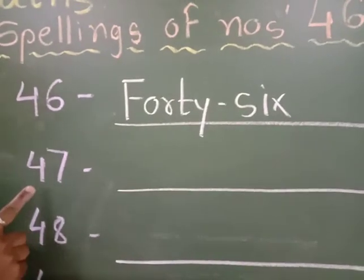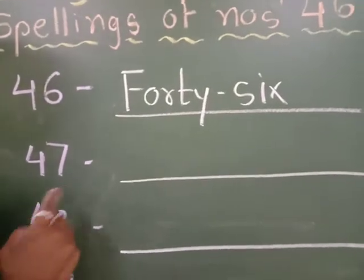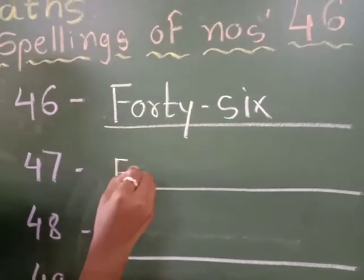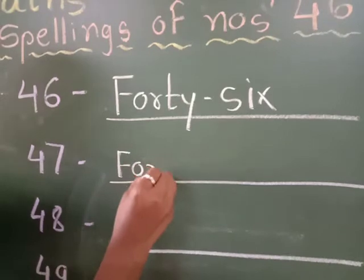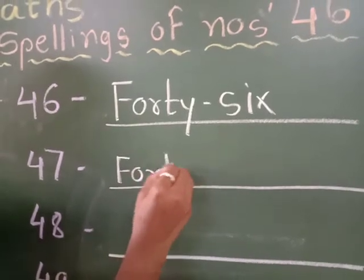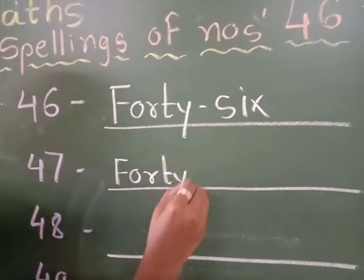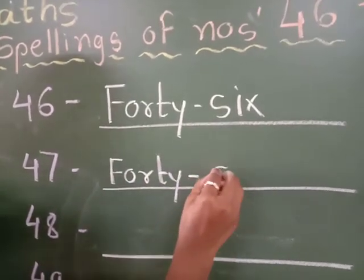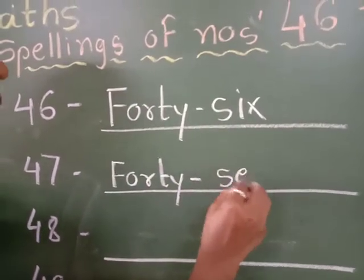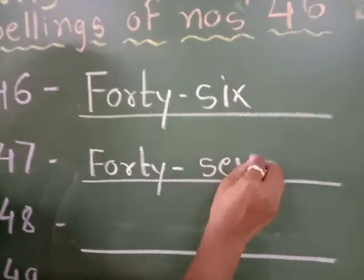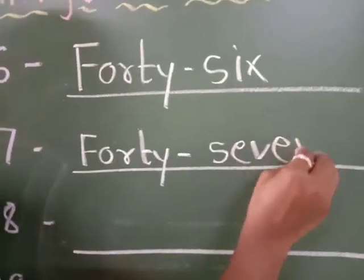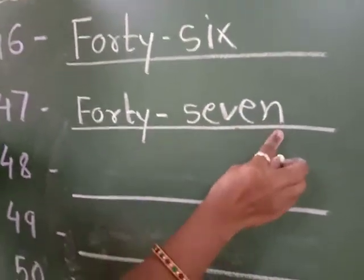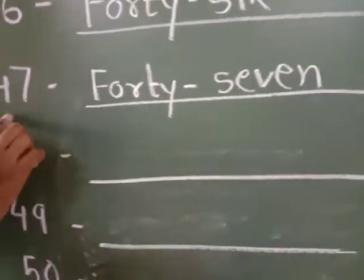The next number is number 47. Again I have to write the spelling of 40 — F-O-R-T-Y — and the spelling of number 7. So what is the spelling of 7? S-E-V-E-N, 47.